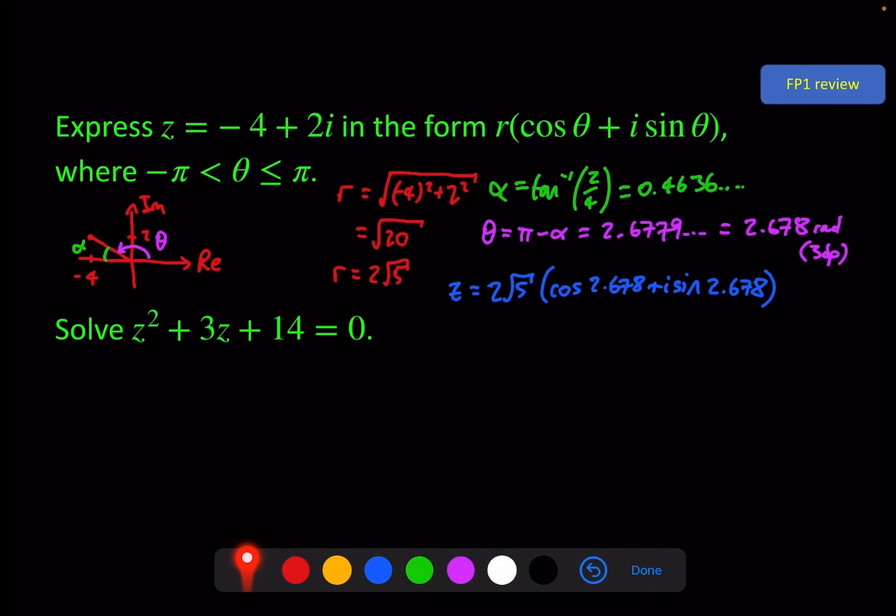So to do this, I'm just going to follow the usual quadratic formula. We've got minus 3, plus or minus the square root of 9, minus 4 times a times c, that gives me 4 times 14, 56, all divided by 2. And this will give minus 3, plus or minus the square root of minus 47, divided by 2, and that is as simple as we can make that.